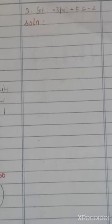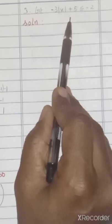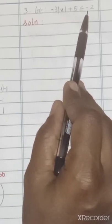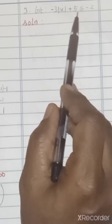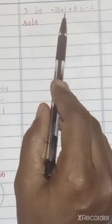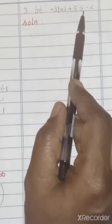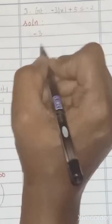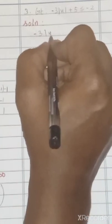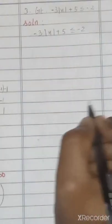Third question: solve −3|x + 5| ≤ −2, and graph the solution on a number line. We have to find the solution for this absolute value and give the solution on the number line.